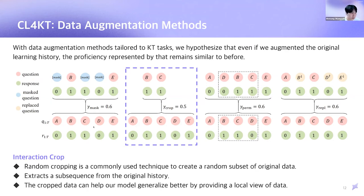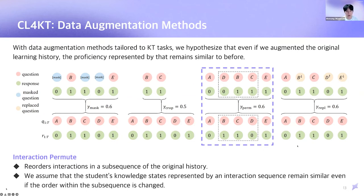The second method is interaction crop. This kind of random cropping is commonly used technique to create a random subset of original data in computer vision or natural language processing. The interaction crop extracts a sequence from the original history. The crop data can help our model generalize better by providing a local view of data.